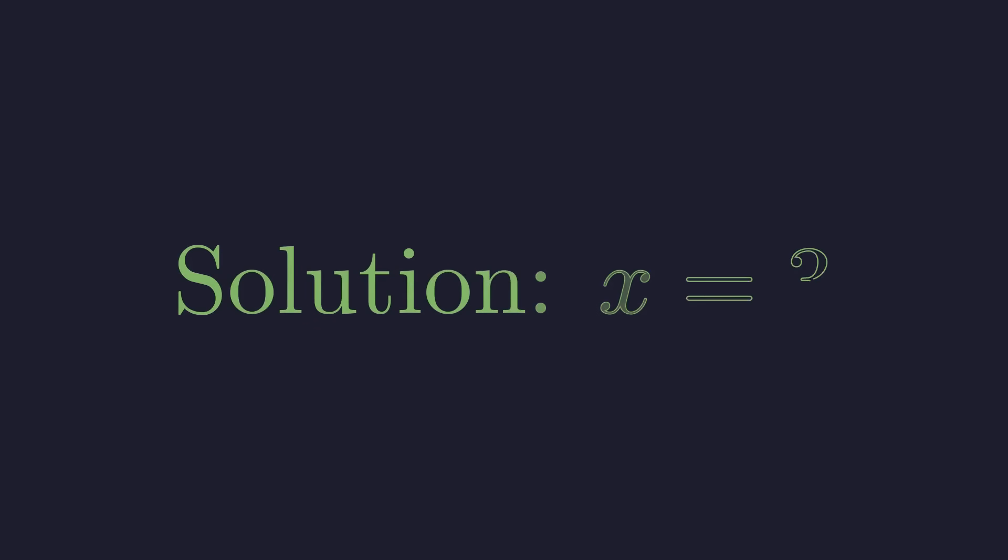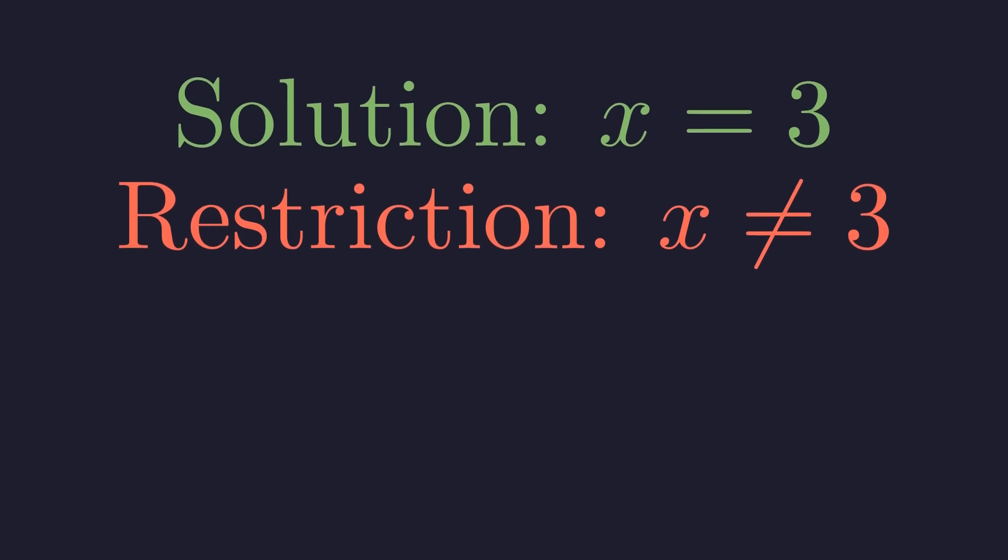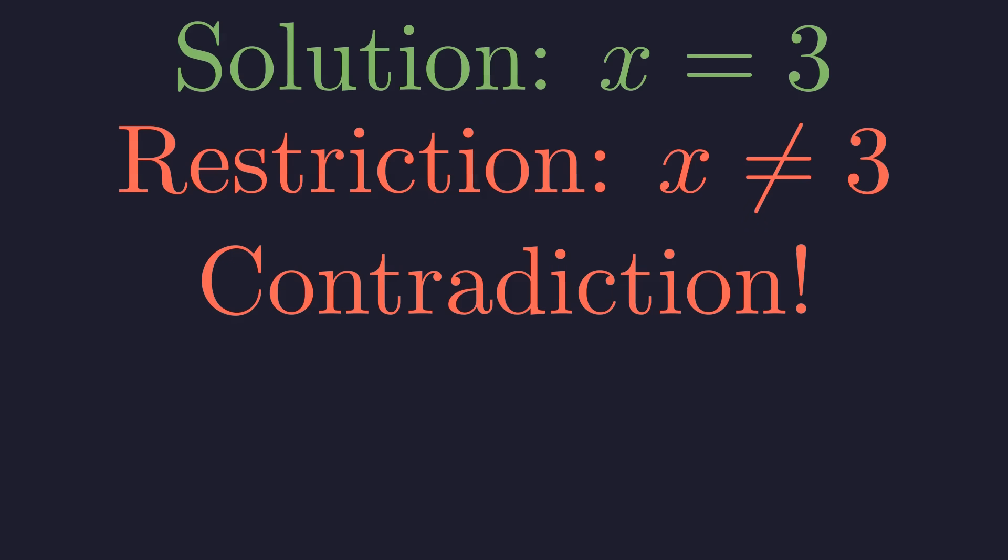The algebra gave us x = 3, but we said at the start that x can't equal 3. So we have a contradiction. The only value the algebra gives us is exactly the value we're not allowed to use. That's the trap.